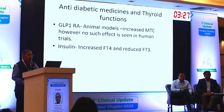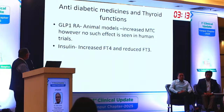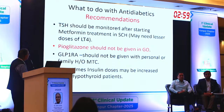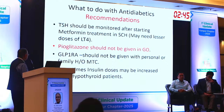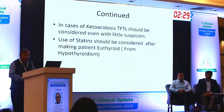GLP-1 receptor agonists: animal models show reports of medullary thyroid carcinoma, so if there is a family history of medullary thyroid carcinoma, avoid GLP-1 receptor agonists. Insulin is safe. Key points: TSH should be monitored after starting metformin in subclinical hypothyroid patients. Pioglitazone should not be given in Graves' orbitopathy. In cases of ketosis, thyroid function tests should be considered. Use of statins should be considered after making the patient euthyroid from hypothyroidism.